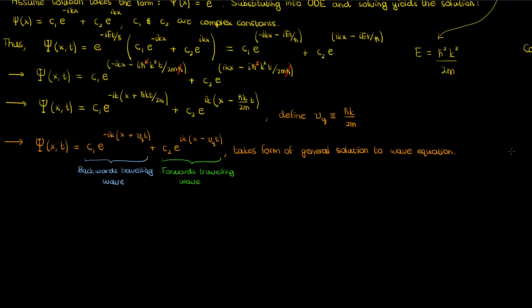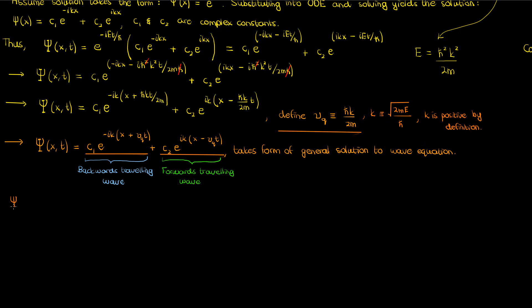From this intuition, if we go back to our wave function, the first term — which has an argument of x plus v sub q times t — can be thought of as a wave traveling backwards, while the second term — with an argument of x minus v sub q times t — travels forwards. The full solution Psi of x and t of the Schrödinger equation for the free particle is a linear combination of these two waves traveling in opposite directions, where v sub q and k are constants defined as shown. From the definition of k, k must obviously be a positive constant. I'll now write the component solutions as a constant c times the exponential of plus or minus ik times x minus or plus v sub q times t.